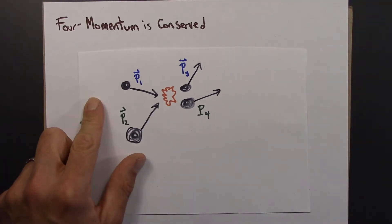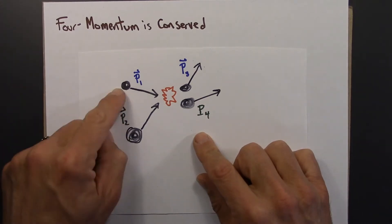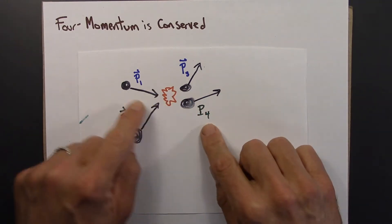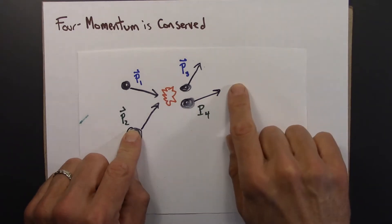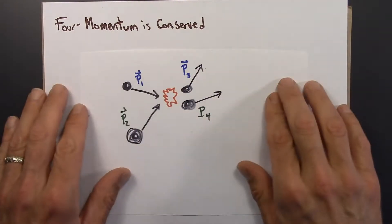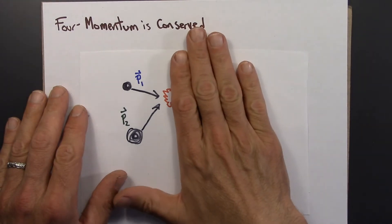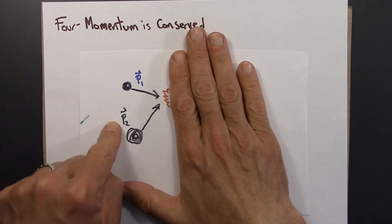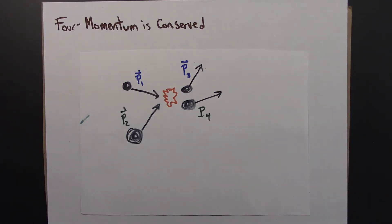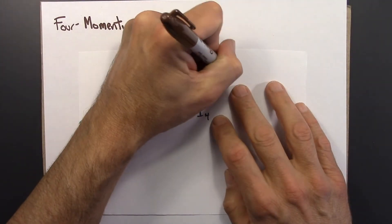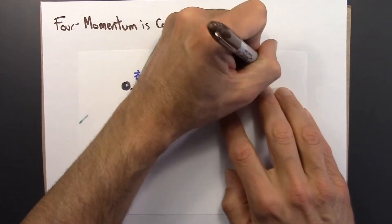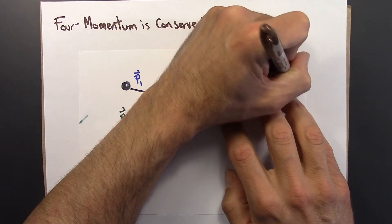Here's some sort of collision. Maybe we have two objects, a big one and a small one, traveling through space and they collide. Maybe this one bounces off this way and this one keeps going that way. And if momentum is conserved — which it would be if this is an isolated system free of interactions — then the total momentum before the collision should equal the total momentum after. So: p1 plus p2 equals p3 plus p4.